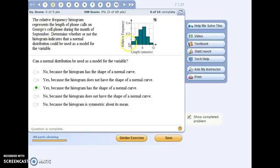For number two, this histogram is roughly bell-shaped, so we could use the normal distribution as a model for this variable.